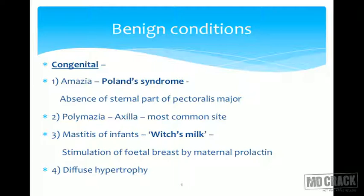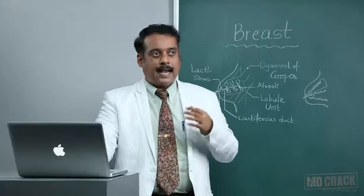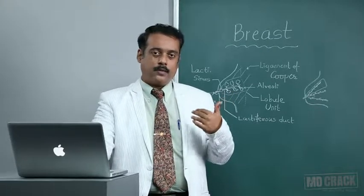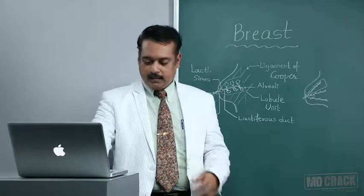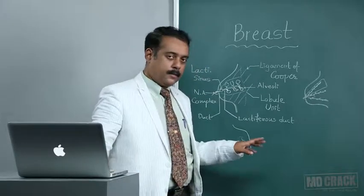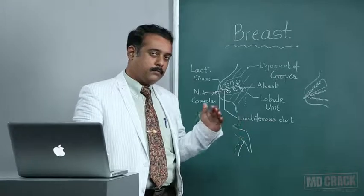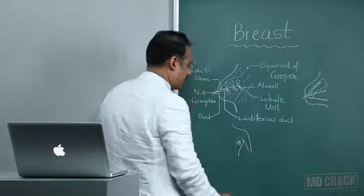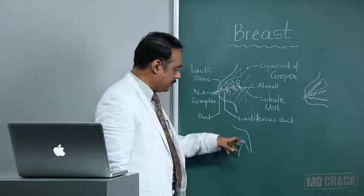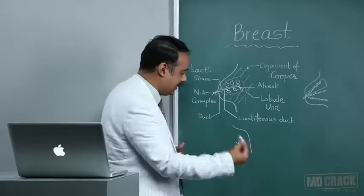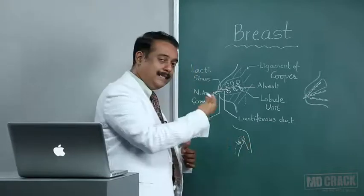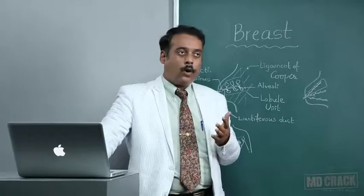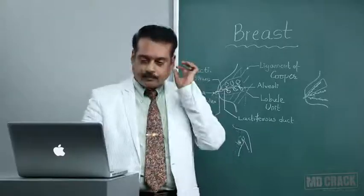After amazia, the next entity is polymastia — presence of accessory or extra breast units on the chest wall. The commonest site is the lateral axilla. There is a mammary line that runs along the body from the axilla, past the normal breast unit, down to the lower abdomen. Along this mammary line there can be accessory nipples or small accessory breast-like structures in the axilla — the commonest site — or at other sites. It can be either an isolated nipple or a complete breast unit.